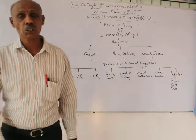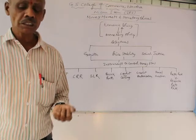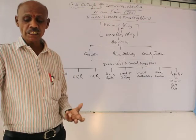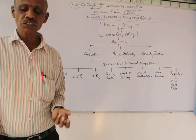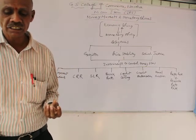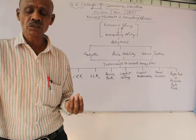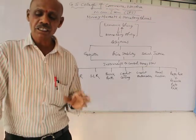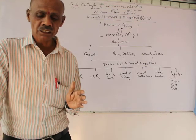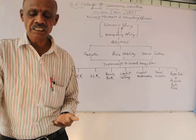The first instrument is open market operations. Whenever we talk about the word market, supply and demand play a vital role. Open market operation is an instrument of monetary policy which involves buying or selling of government securities from the public and other banks. It is a mechanism to influence the reserve position of the banks, the yield on government securities, and the cost of bank credit. The RBI sells government securities to control the flow of credit and buys government securities to increase the credit flow. Open market operations make bank rate policy effective and maintain stability in the government securities market.